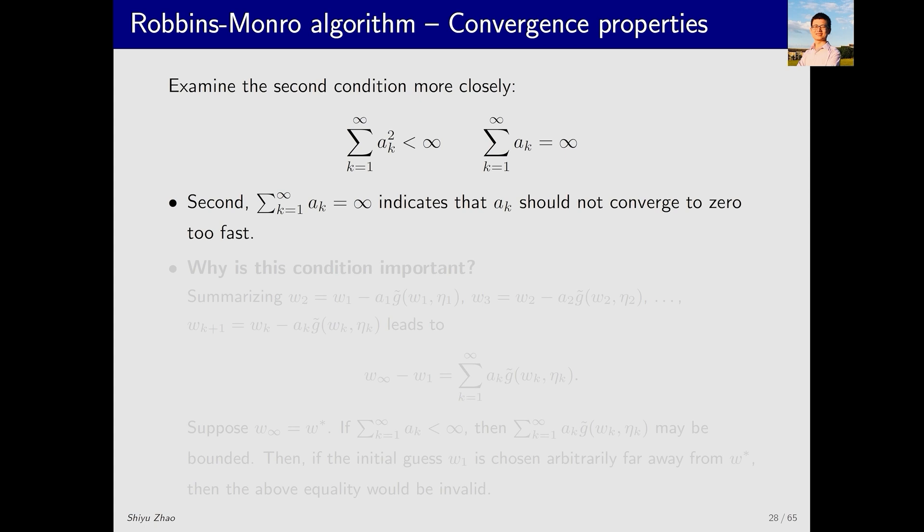The second condition is that the sum of a_k should be infinite. We mentioned earlier that this condition means that a_k should not converge to zero too fast. Why is this condition important? Let's take a closer look. We write out the RM algorithm step by step.